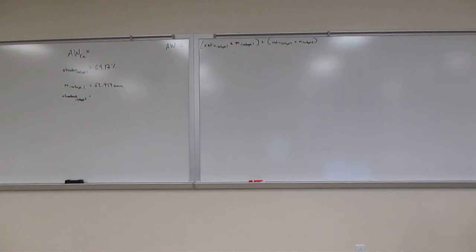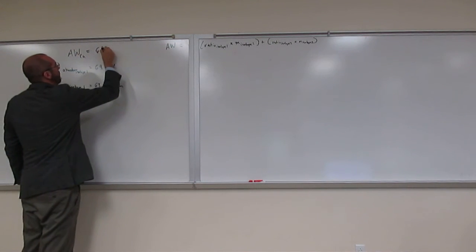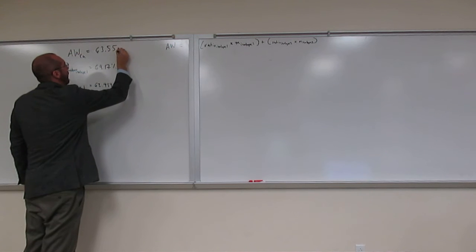So it says copper has two naturally occurring isotopes. Copper-63 has a mass of 62.939 AMU and a relative abundance of 69.17%. The atomic weight of copper, or use the atomic weight of copper to determine the mass of the other copper isotope. So in order to do this problem, you have to have a periodic table unless you've memorized the atomic weight of copper. So the atomic weight of copper is 63.55 AMU.